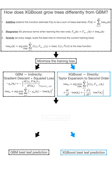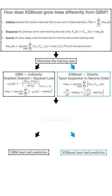Recall that a tree with J leaves splits samples at root into J disjoint regions, and all the samples at the leaf get the same constant prediction. At the end of the day, the best leaf prediction for GBM is the average of the gradients of all samples at the leaf, and the best leaf prediction for XGBoost is the sum of gradients over sum of Hessians of all samples at the leaf.